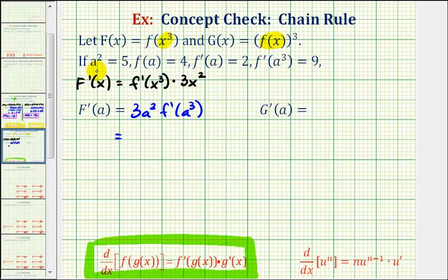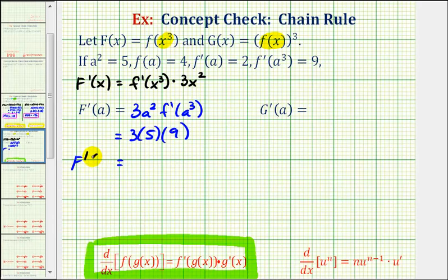We're told that A squared equals five, so it would be three times five times F prime of A cubed, which is equal to positive nine. So F prime of A is equal to three times five times nine, which is equal to 135.